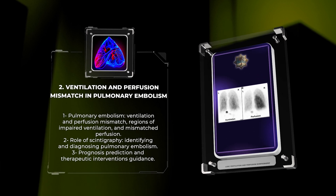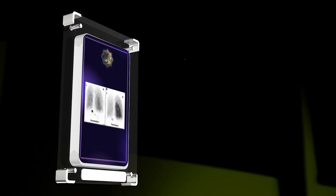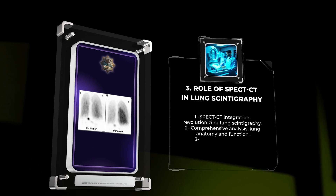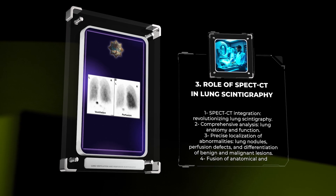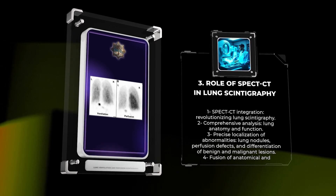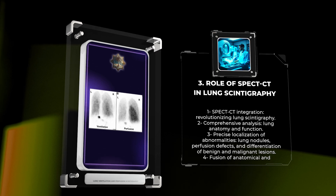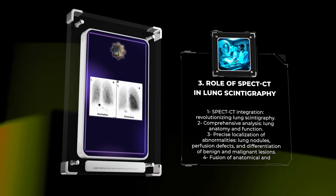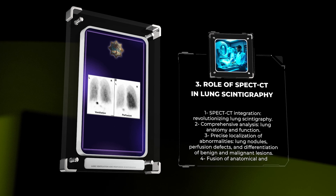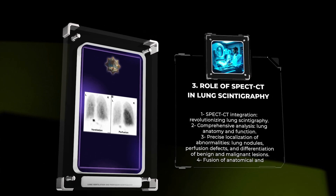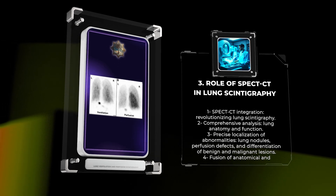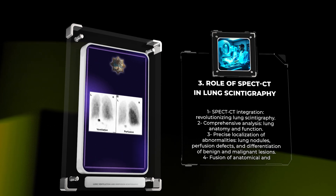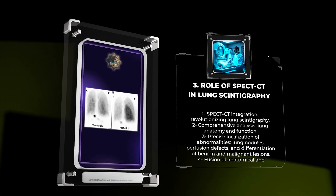The integration of single photon emission computed tomography with computed tomography, SPECT/CT, has revolutionized the field of lung scintigraphy. SPECT/CT provides a comprehensive and detailed analysis of lung anatomy and function, allowing for precise localization of abnormalities detected on scintigraphy. This hybrid imaging technique enables better characterization of lung nodules, assessment of lung perfusion defects, and aids in the differentiation of benign and malignant lesions. The fusion of anatomical and functional information provided by SPECT/CT enhances diagnostic accuracy and improves patient management.